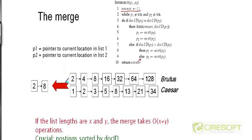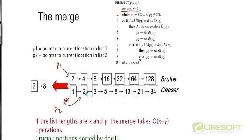Let's run this pseudocode through a concrete example. Initially P1 and P2 both point to the first elements of their lists. P2 is pointing to the smaller element, which is 1, so doc ID of P1 is greater than doc ID of P2, and we increment P2. Now doc IDs of P1 and P2 are both equal to 2, so this first condition is true — document 2 contains both terms. We append 2 to our answer list, then increment both pointers.